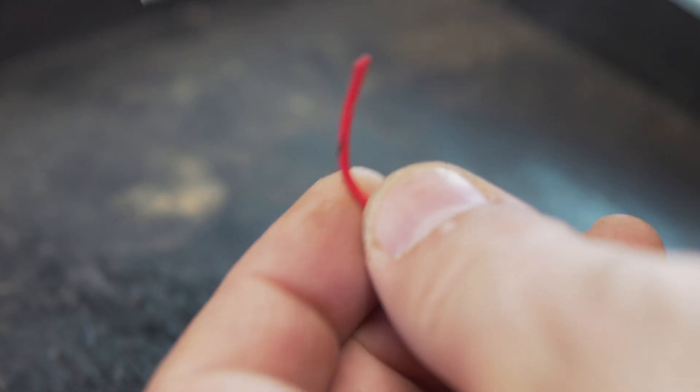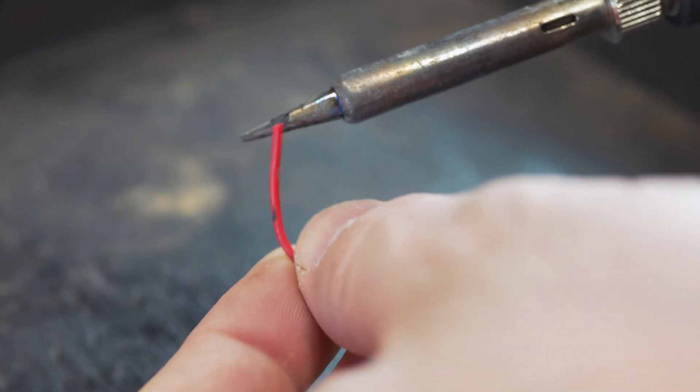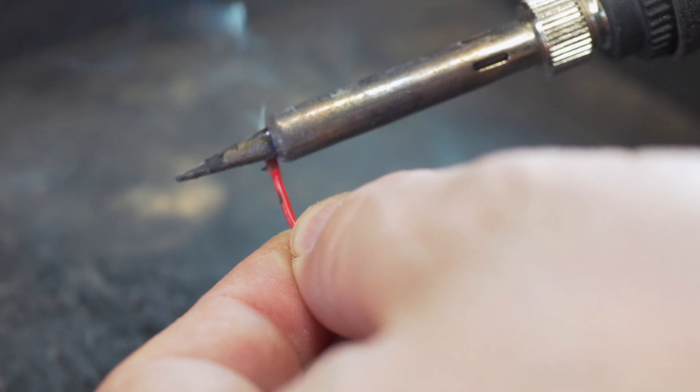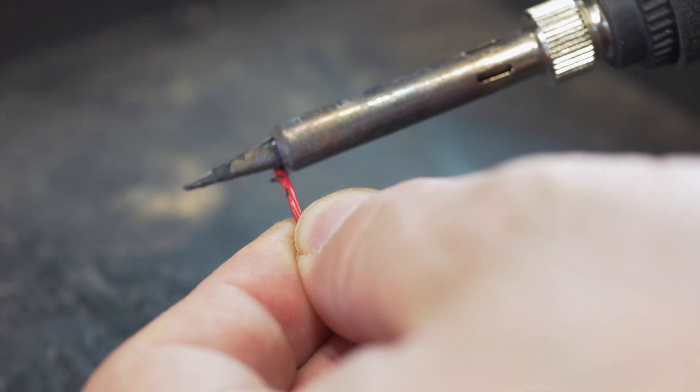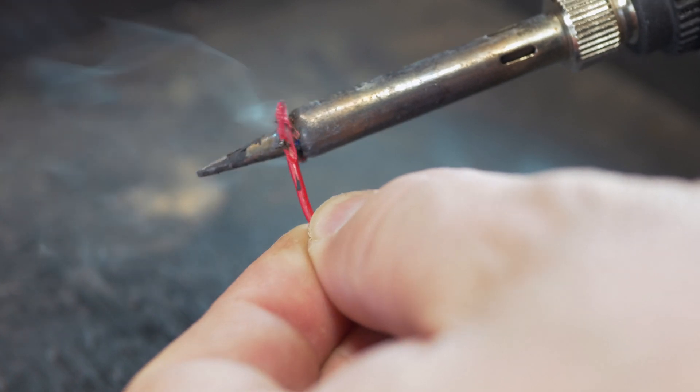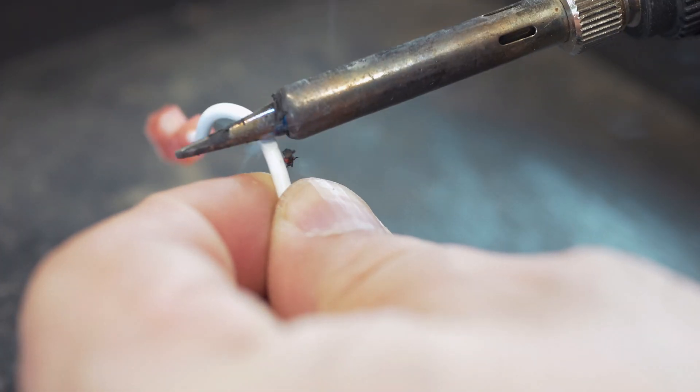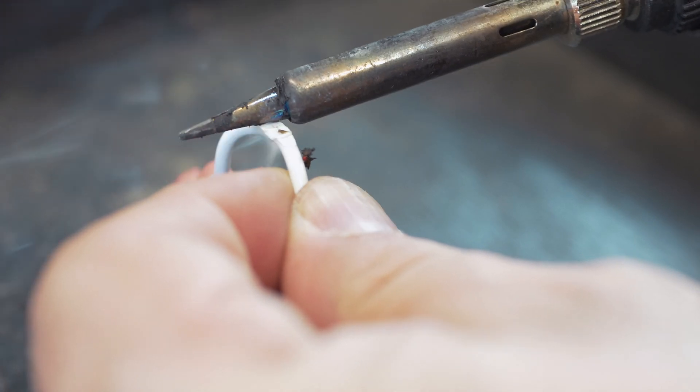The PVC wire burns when it's exposed to high temperatures and it smokes. Not only that, but it ruins your soldering iron. Even the thicker gauge PVC wires smoke and burn.